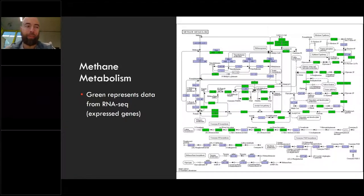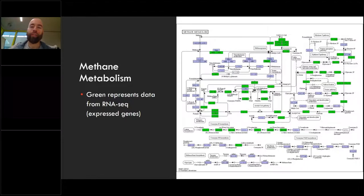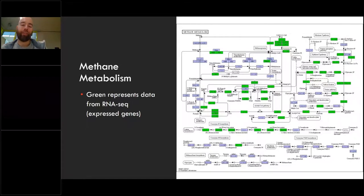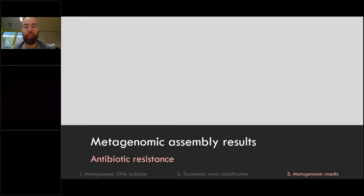To summarize: when you have a really good working metagenomic pipeline, you are able to get lots of genomes out of there. Usually, especially for environmental samples, most of it is not well-described, so you get lots of genomes you can't classify and then you need to start digging deep. This is ongoing research now at the Swedish universities — we are currently looking at those unknown ones so we can describe them.